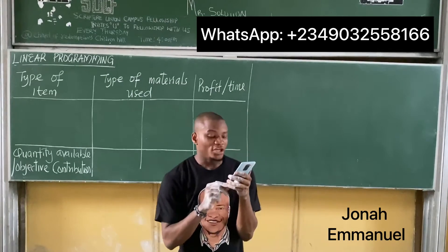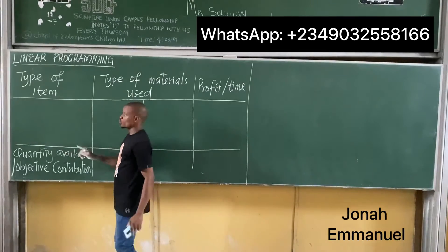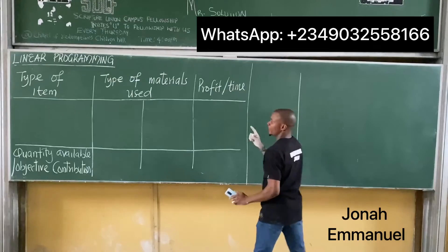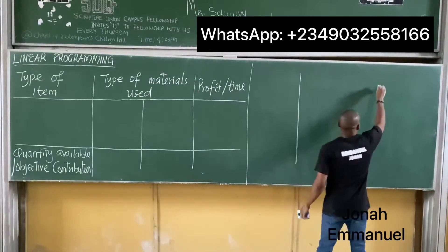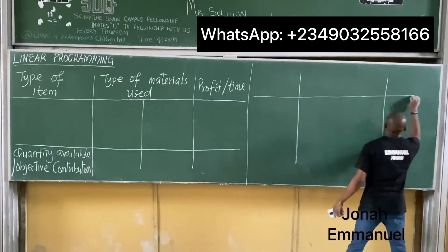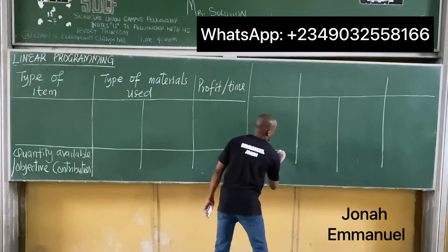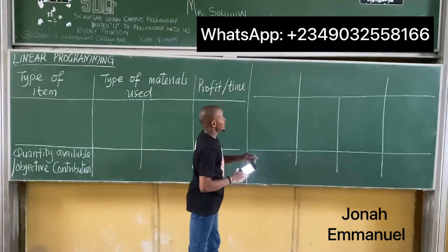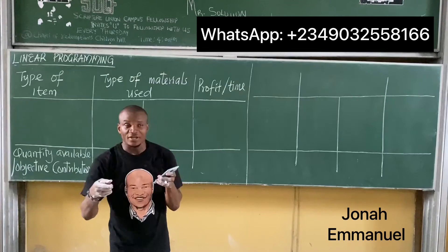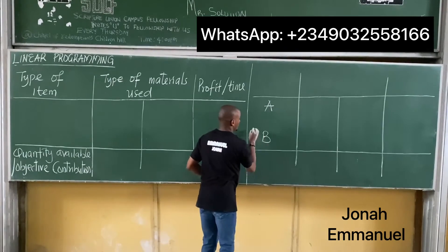Check there. It says a food vendor can make two types of drinks. So the type of item should be listed here. The items are A and B — those are the type of item. I'll put A on this part and B on the other.